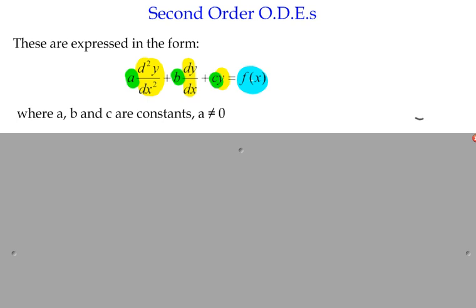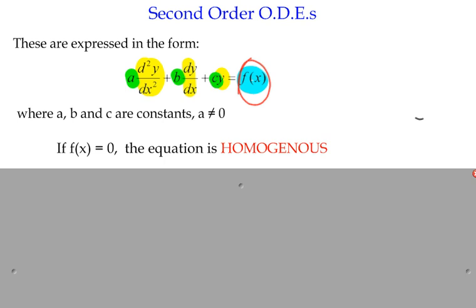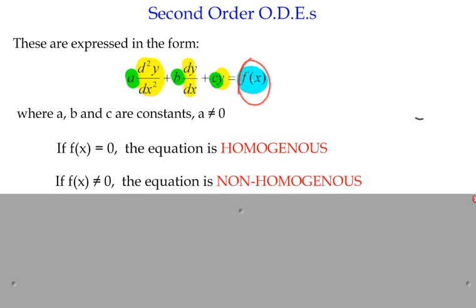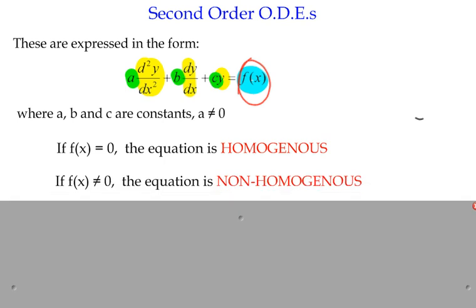There are two types of second order differential equations, and it comes down to what's on the right-hand side. The first scenario is there's a zero on the right-hand side, and we call that a homogeneous second order differential equation. If the right-hand side equals zero it's homogeneous, and if not, it's non-homogeneous. There are two different strategies depending on whether the equation equals zero or not.